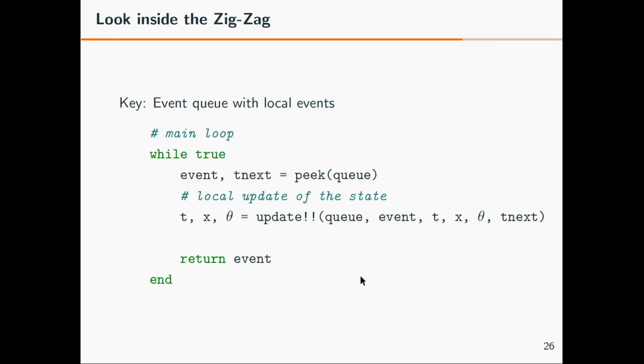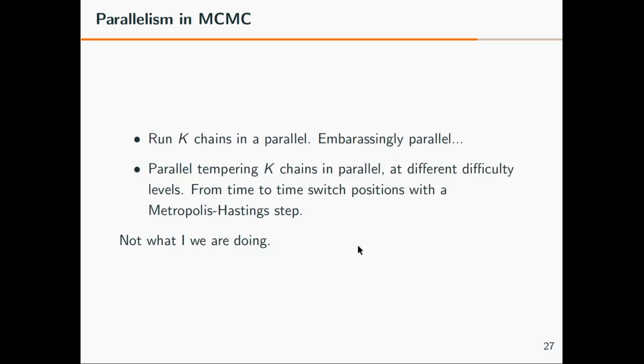Because each of the coordinates have these events independently and you have to decide what happens next, if you look inside the implementation of the zigzag sampler there's an event queue in there. The main loop you can imagine is something like peeking into the queue: what happens next? Which coordinate has an event? And then updating locally the state of the process according to this event. So perhaps you have to flip one velocity sign of one coordinate. But to decide whether this happens you have to look at the neighboring coordinates. I just want to say a bit about what we are not doing in parallelism here. Typically people look at running k chains in parallel. That's an embarrassingly parallel problem, but it also means that you have to run k chains simultaneously. You get k times a large state space. So we want to do something different. We're also not doing parallel tempering, but that's something we could actually consider.